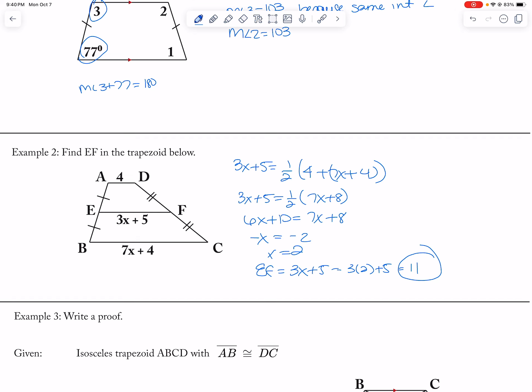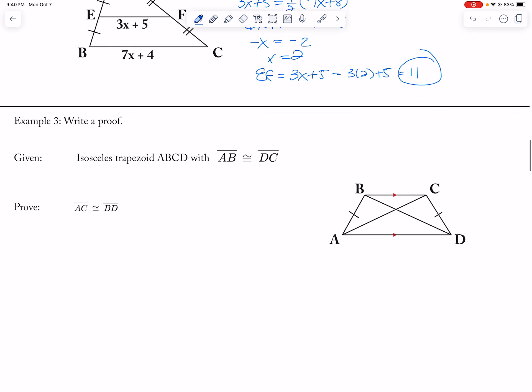Okay, and then I got to write a proof, of course. So I have an isosceles trapezoid with AB is congruent to CD. Okay, so these side lengths are congruent to each other. And I want to prove that the diagonals are congruent. So I can't use the theorem that I'm trying to prove. And that is given.